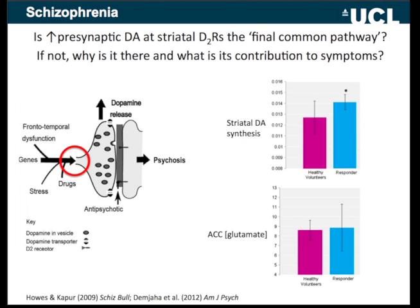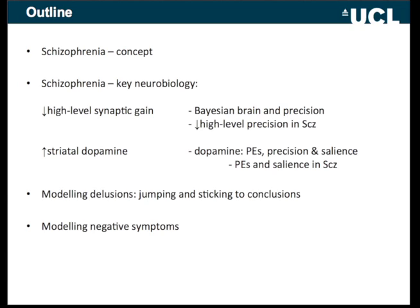This does seem to be the case for many people with schizophrenia. Striatal dopamine synthesis is significantly elevated in psychosis compared to healthy volunteers — not by a huge amount, but significantly. But in people who do not respond to antidopaminergic treatment, you don't find a significant elevation; instead you find more glutamatergic abnormalities in cingulate cortex. So even this might not actually be a final common pathway. With that on board, we'll talk about loss of synaptic gain and how it might be modeled in Bayesian terms.